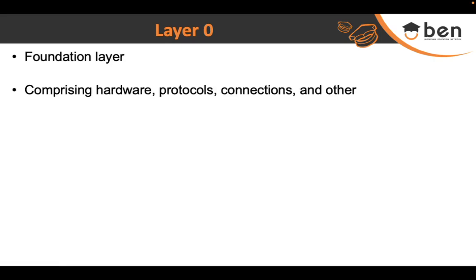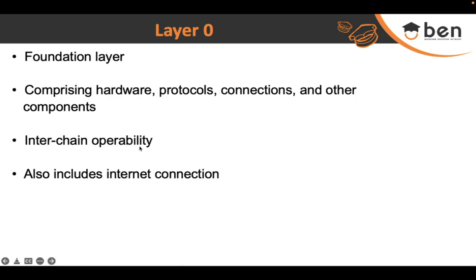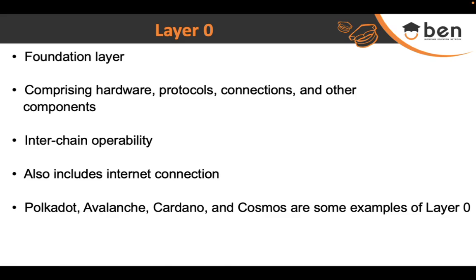Starting with Layer 0 — as I mentioned, it's the foundation layer, also known as the infrastructure layer. Though there is a separate hardware layer at the bottom, Layer 0 is just on top of it, so we consider Layer 0 to comprise all infrastructural resources: the hardware, the protocols, the connections, and all other components. Interchain operability is also a feature handled at Layer 0, allowing functions to be shared or transferred across multiple chains. The peer-to-peer network connections between nodes are also managed here. Examples of Layer 0 blockchains include Polkadot, Avalanche, Cardano, and Cosmos.